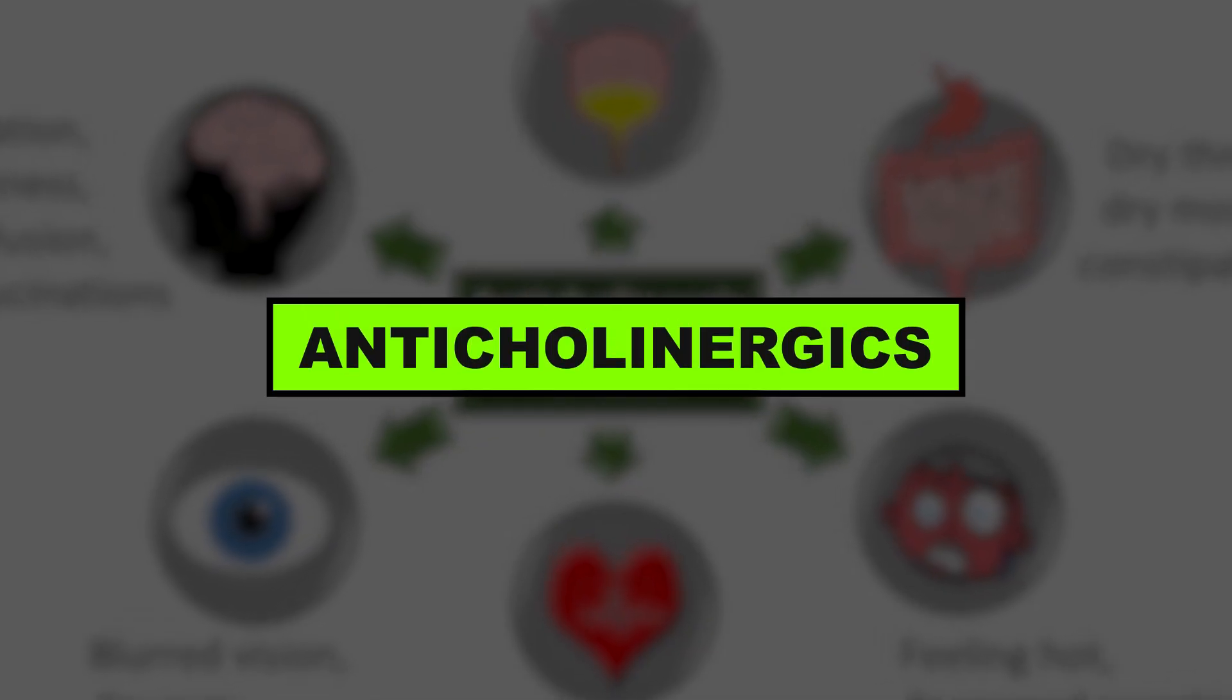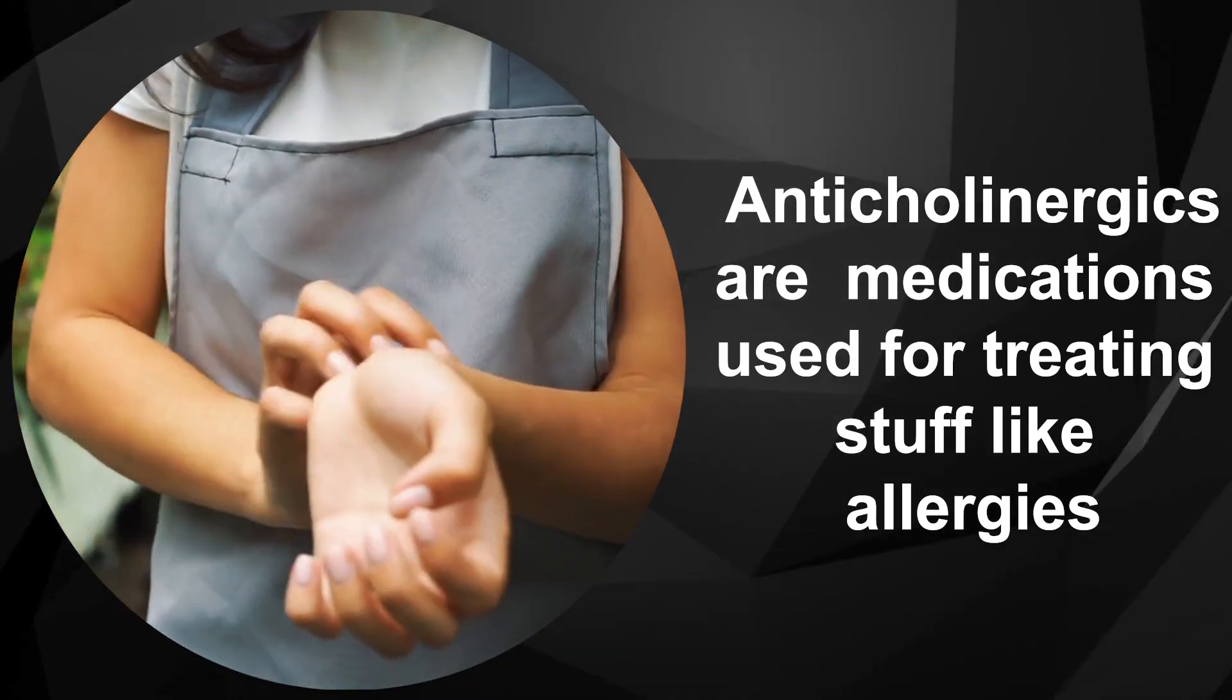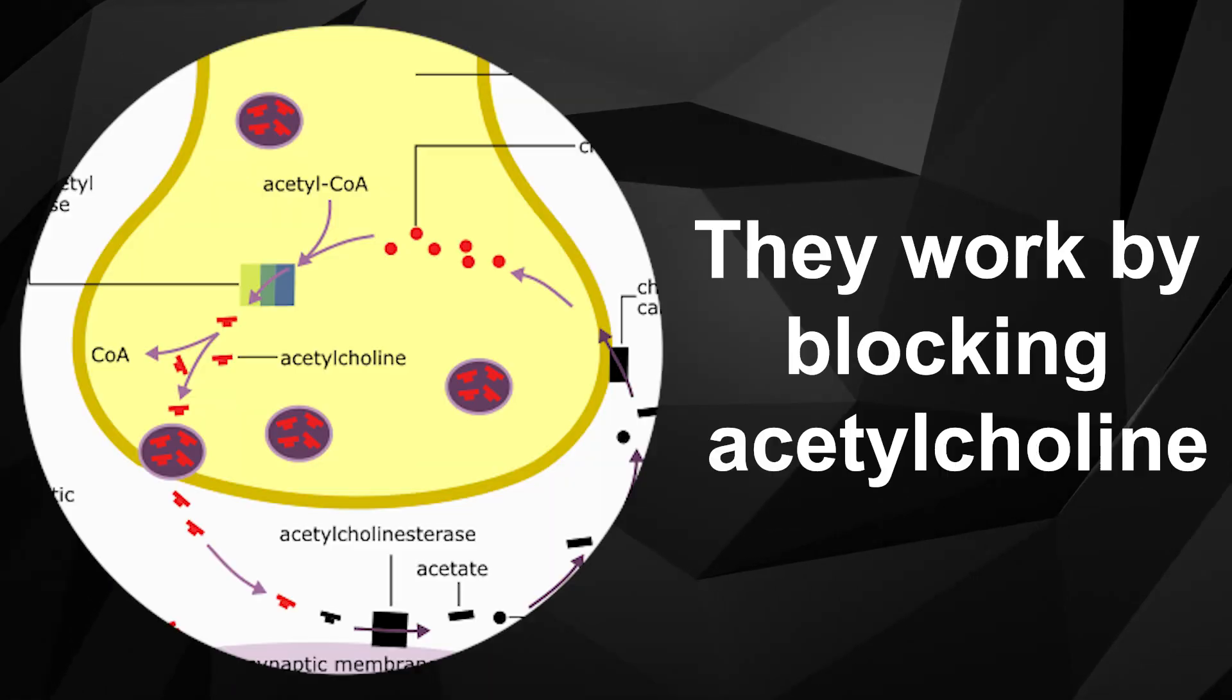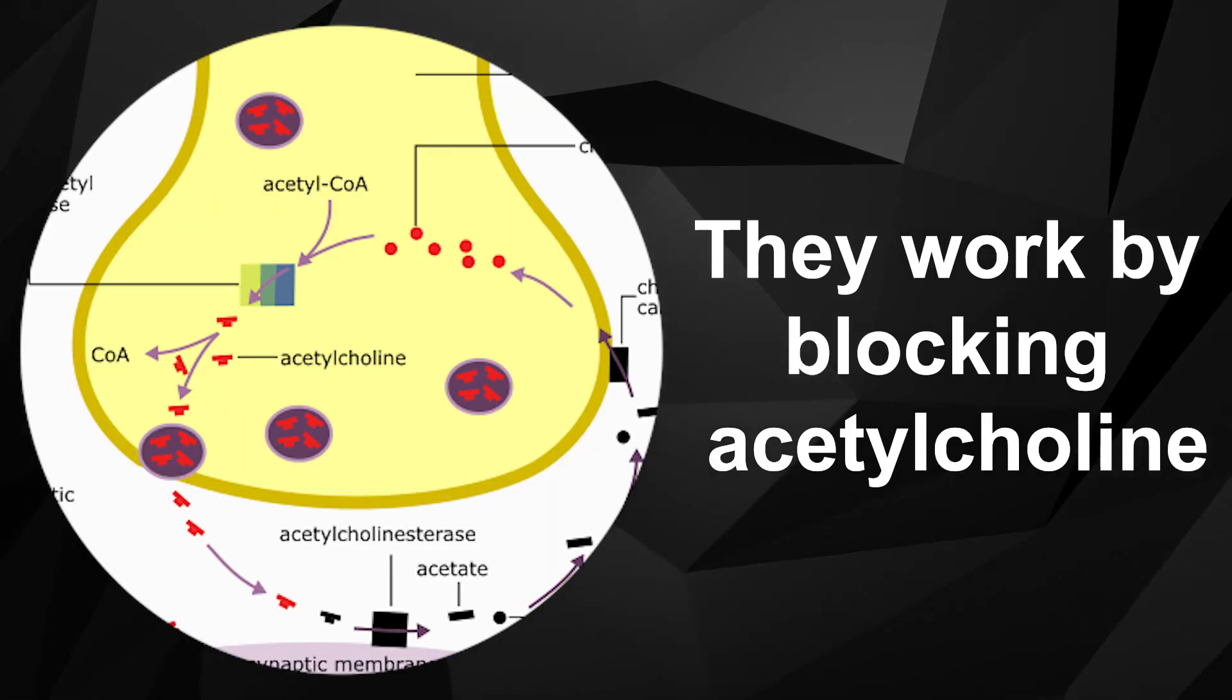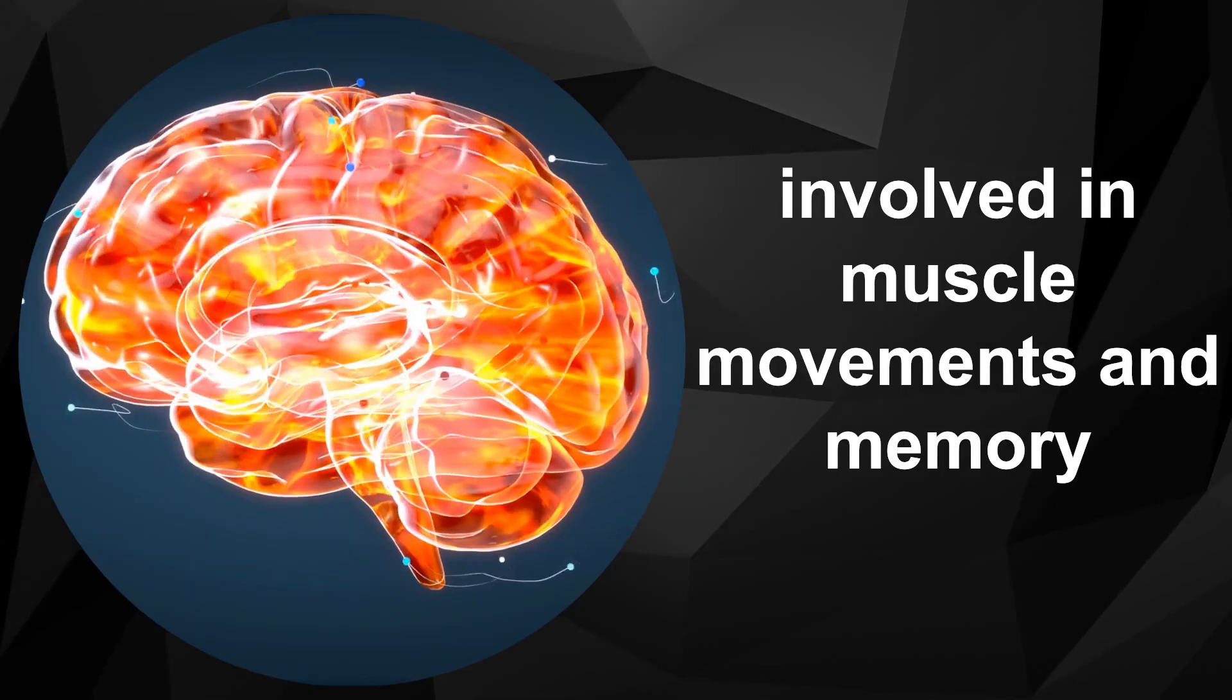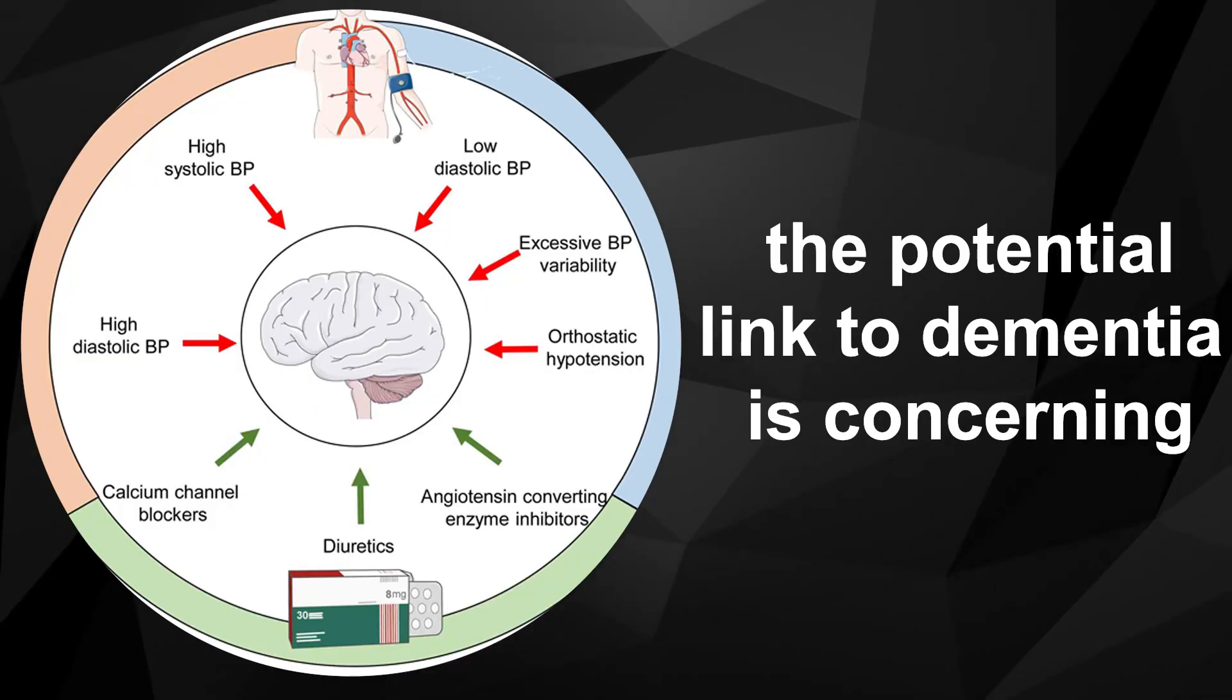Two, anticholinergics. Anticholinergics are medications used for treating stuff like allergies, peeing problems, and stomach issues. They work by blocking acetylcholine, which is a chemical messenger in the brain involved in muscle movements and memory, and the potential link to dementia is concerning.